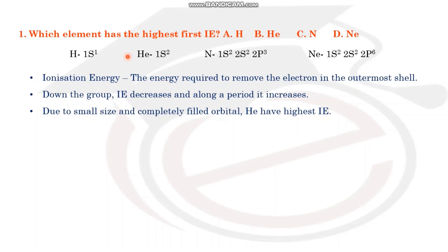In this case, helium has a completely filled 1s orbital. Nitrogen is half-filled. Neon is a noble gas. Comparatively, helium has a small size. Because of its small size, more energy is needed to remove an electron. Therefore, helium has the highest ionization energy.